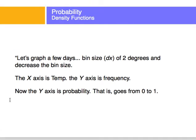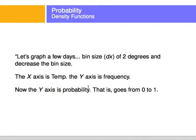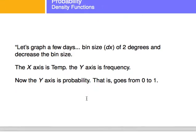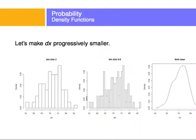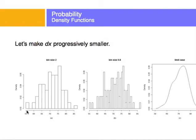Now, the y-axis will be frequency and I will measure it from zero to one, so it resembles probability. So let's look at what happens when I vary the bin size. So first I have a bin size of two.